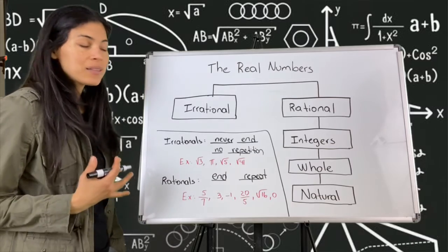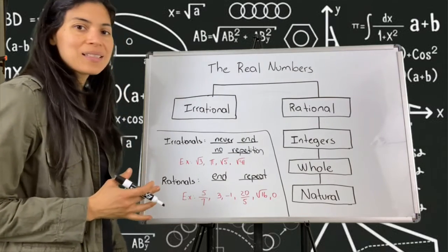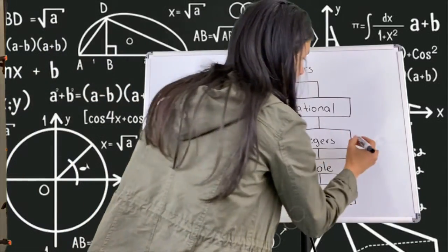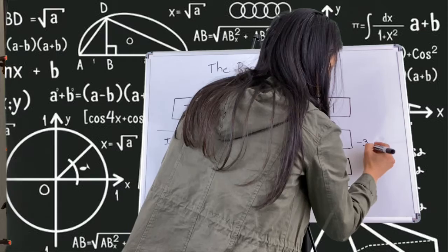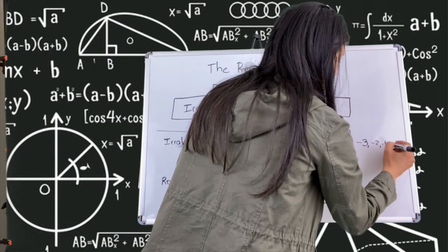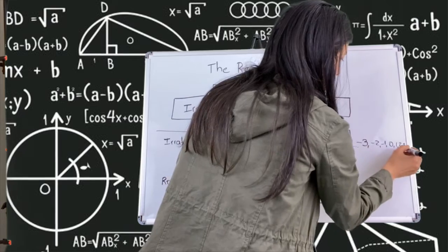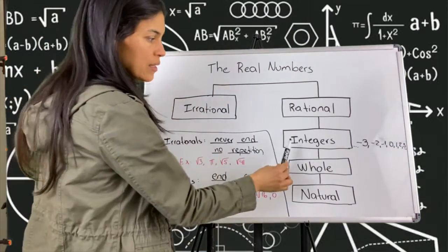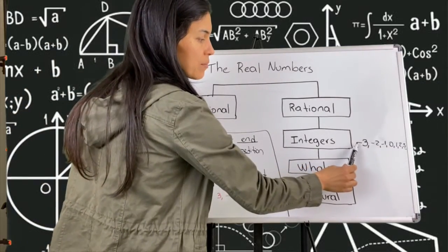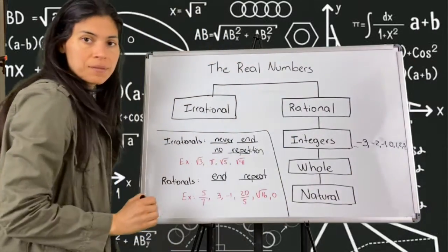Now we can divide rational numbers further — we can divide rational numbers into integers. Integers don't have decimal points; they are just whole numbers, but not only that — they also include negative numbers. For example: 0, 1, 2, 3, and this goes to the infinite. So integers are all the whole numbers without decimal points including the negatives; they are infinite, ranging from negative infinity through zero to positive infinity.